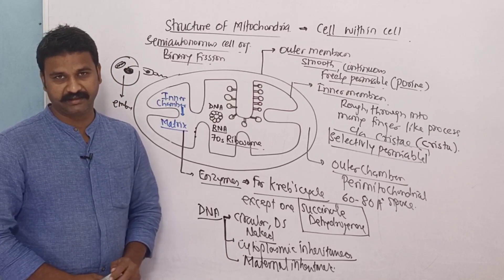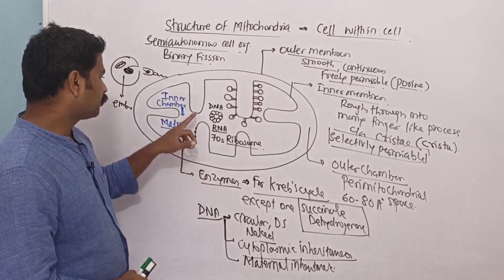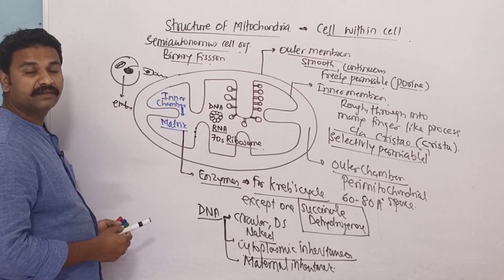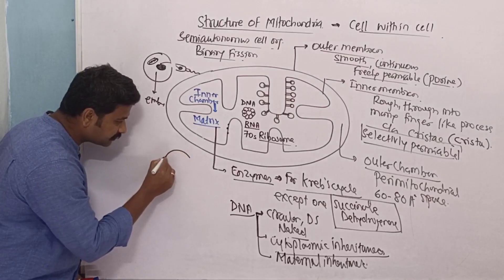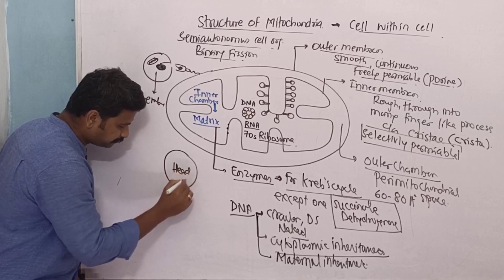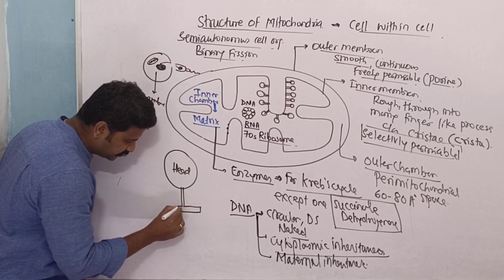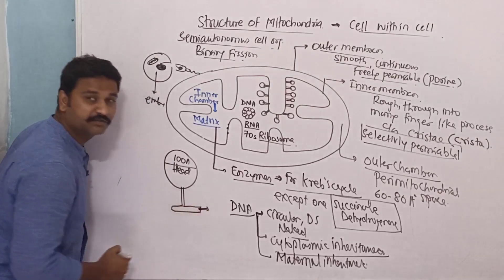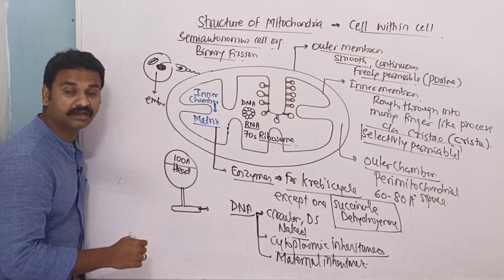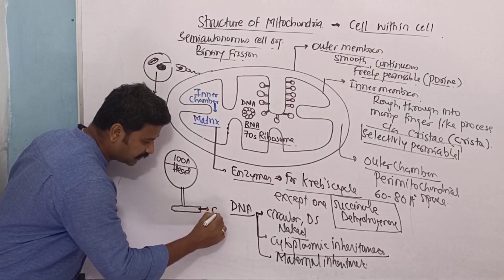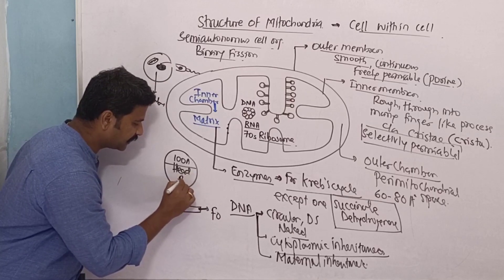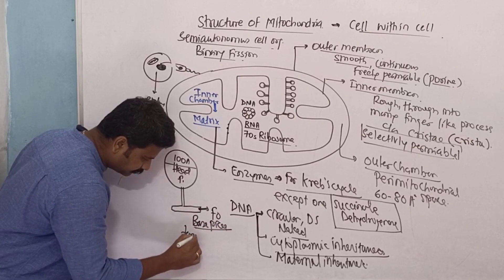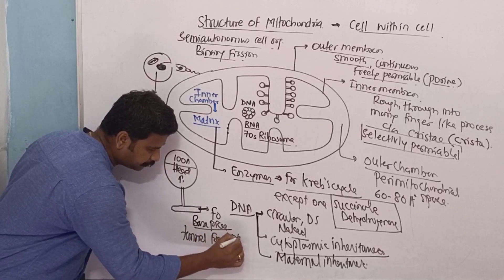Cytoplasmic inheritance is also called maternal inheritance. Now, regarding the oxysomes or F0F1 particles — these stalk particles consist of a head, a stalk, and a base piece. The head has a diameter of 100 angstroms. The base piece is present in the inner membrane and forms a tunnel for proton transport. The base piece is called the F0 unit and the head is called the F1 unit. F0 forms a tunnel for proton transport.